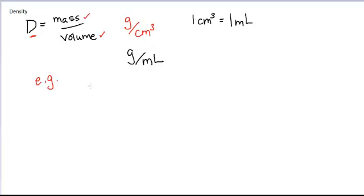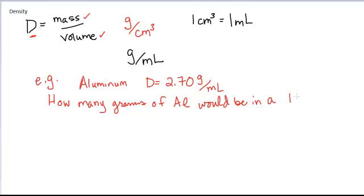For example, let's say we have aluminum, and you look up in the table, and the density of aluminum is 2.70 grams per milliliter. It can be written as grams per milliliter or grams per cubic centimeter. That is the density of the substance. We might want to know how many grams of aluminum are in a certain volume. For example, how many grams of aluminum would be in a 10.8 milliliter sample?